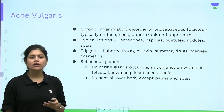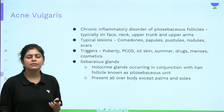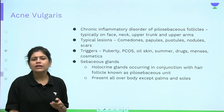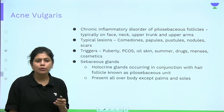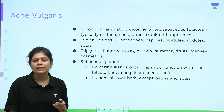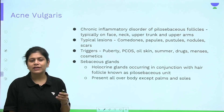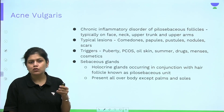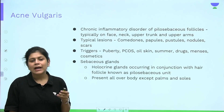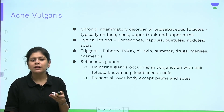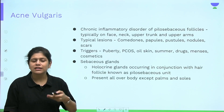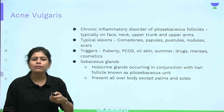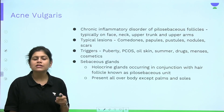The most common disorder of the sebaceous gland is acne vulgaris — a chronic inflammatory disorder of the pilosebaceous follicles, typically involving the face, neck, upper trunk, and upper arms. The typical lesions are comedones, which are of two types: open comedones, where blockage is exposed to air and oxidizes turning black (blackheads), and closed comedones, where the keratin plug is deeper and not exposed to air (whiteheads).